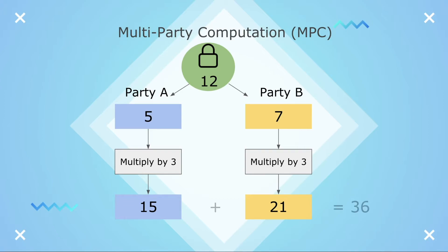When the outputs are combined, it's the same result, 36, as if the calculation had been performed on the original data of 12 times 3. But because neither party knows the output of the other, it can't deduce the original data.